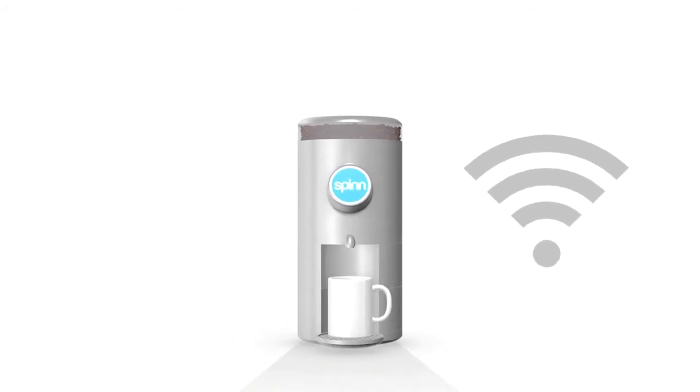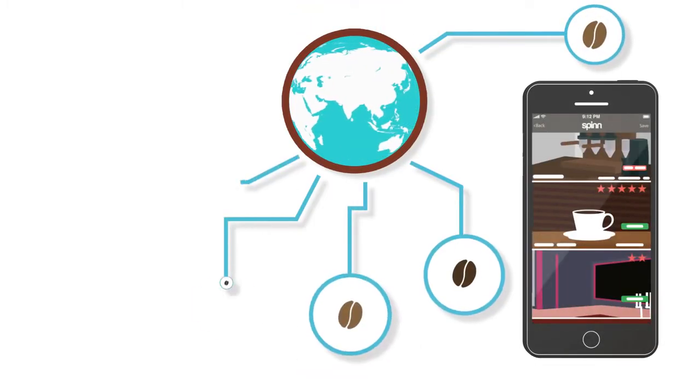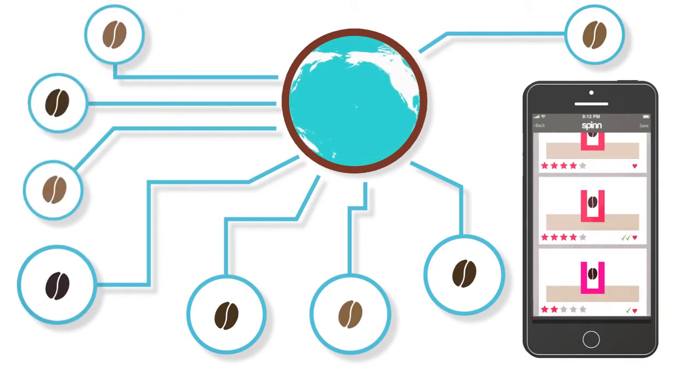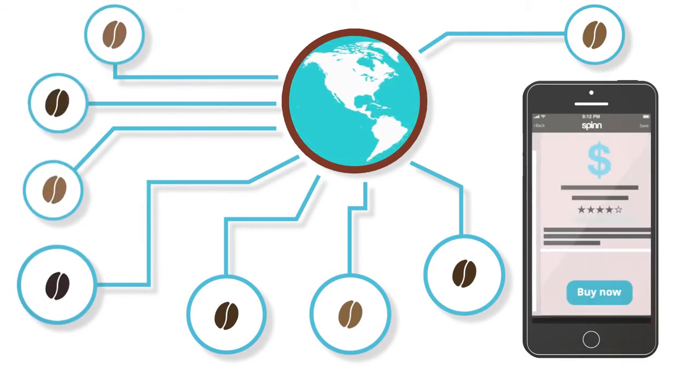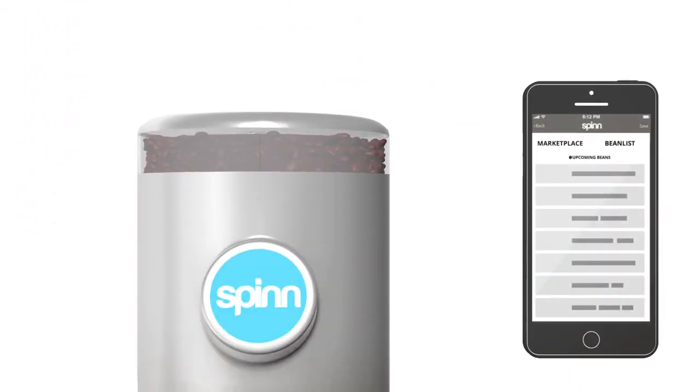Spin Coffee also has built-in sensors that will connect with your phone. Using our app, you can shop from both local and national roasters. Discover reviews, product comparisons and clear pricing, helping you decide what's right for you. You can then add your favorite coffee beans to your bean list.